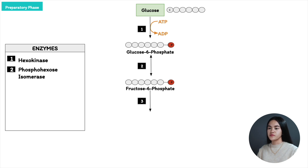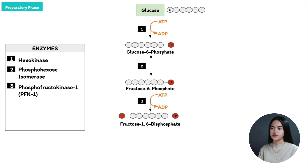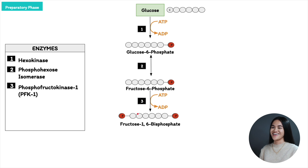From fructose-6-phosphate, it's going to be transformed to fructose-1,6-bisphosphate. This step involves ATP and the enzyme phosphofructokinase 1, or PFK1. PFK1 transfers the phosphate group from ATP to carbon 1 of fructose, because the carbonyl group was moved to carbon 2 in the previous reaction, allowing carbon 1 to be phosphorylated. When compounds have two phosphate groups at different positions, they are called bisphosphates — hence fructose-1,6-bisphosphate, with phosphate groups at carbon 1 and carbon 6. This reaction is irreversible.